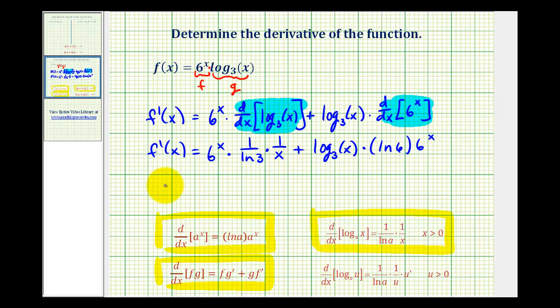Now let's determine these products. This first product will be a fraction where the numerator is going to be six to the power of x, denominator would be x natural log three. Plus, to keep this product straight, we may want to put everything in parentheses. So we have log base three of x times six to the x times natural log six.